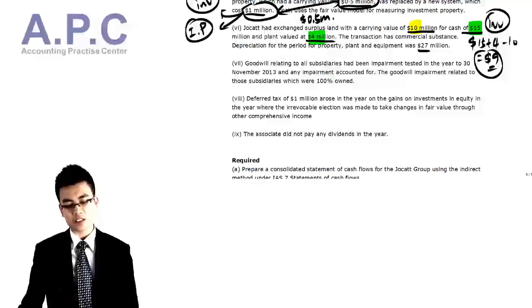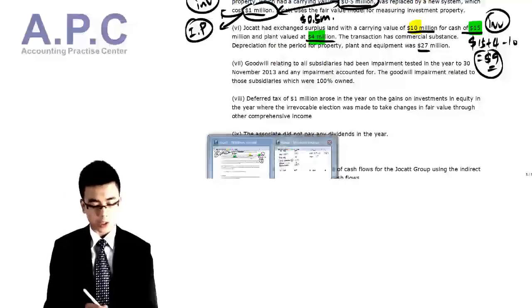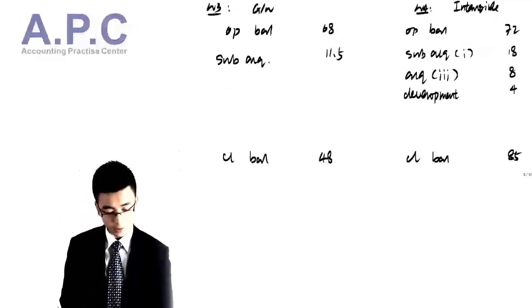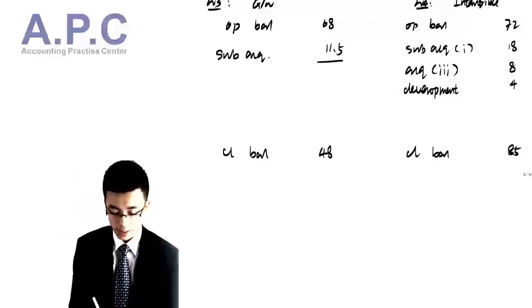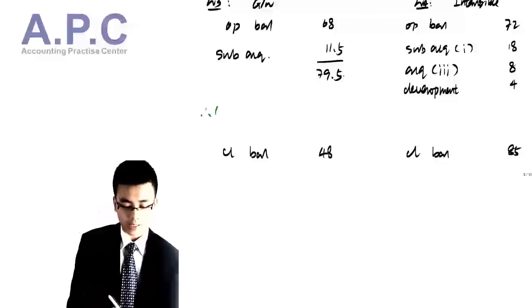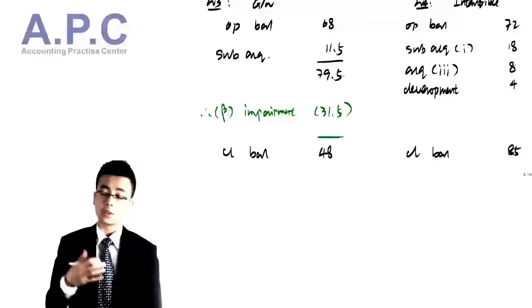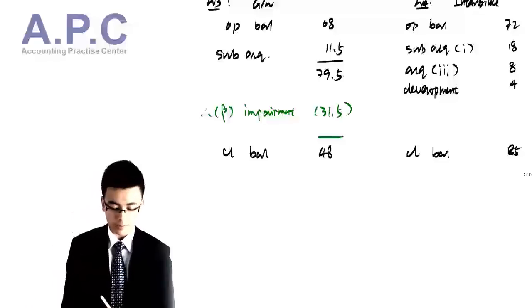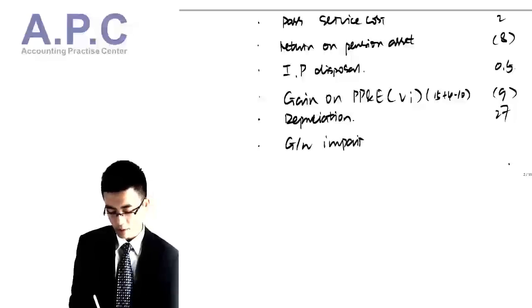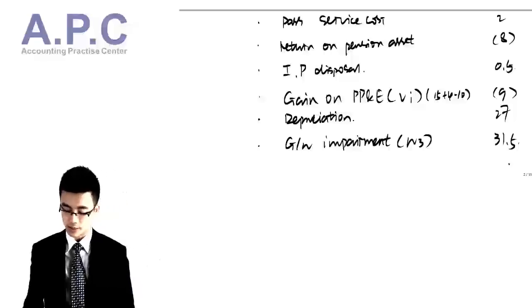Note 7: Goodwill relating to all subsidiaries is to be impaired at 100% for the subsidiary. Looking at the goodwill working number 3: opening balance plus subsidiary acquisition gives 79.5, and the closing balance is 48, so the balancing figure is the goodwill impairment of 31.5. This goodwill impairment is included in the non-cash item adjustment as an add-back of 31.5.